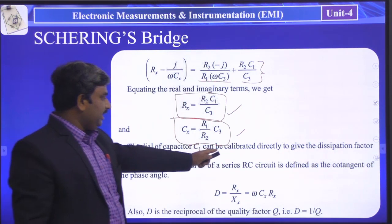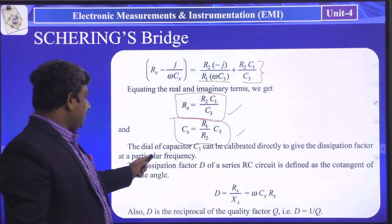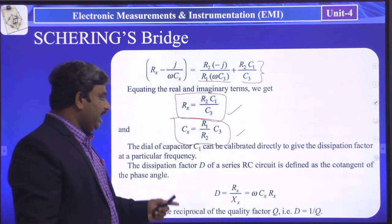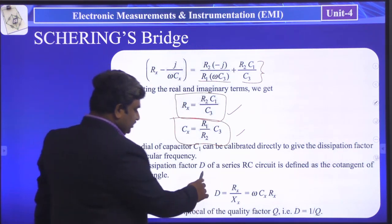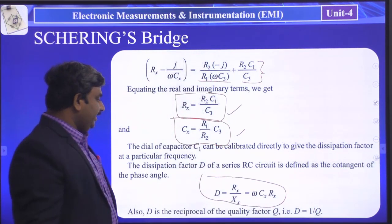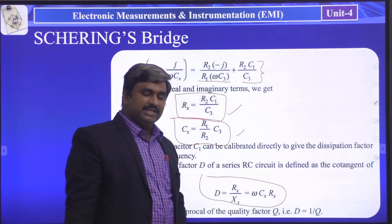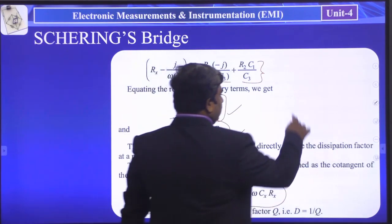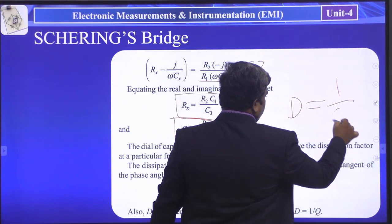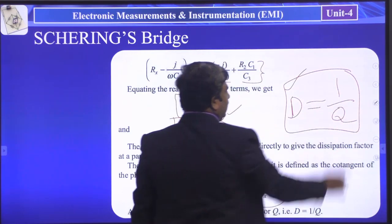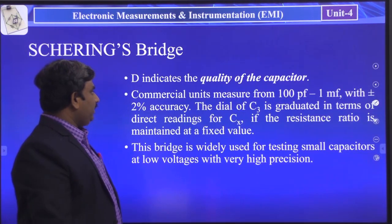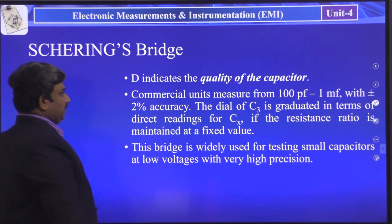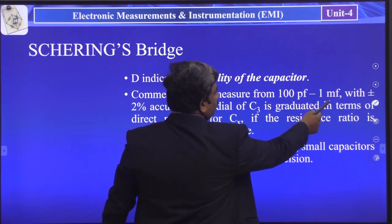The dial of capacitor C1 can be calibrated directly to give the dissipation factor at a particular frequency. The dissipation factor D of a series RC circuit is defined as the cotangent of the phase angle, where D = Rx/Xx = ωCxRx. D is the reciprocal of Q: D = 1/Q. D indicates the quality of the capacitor.